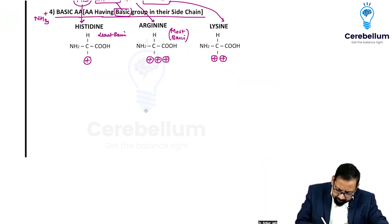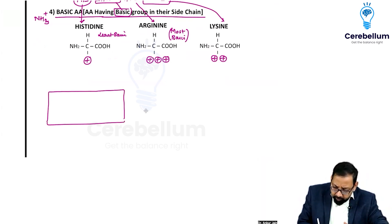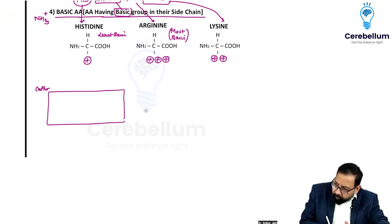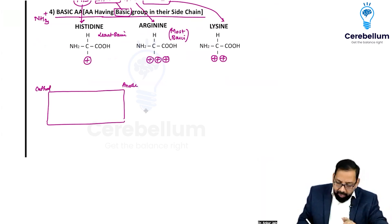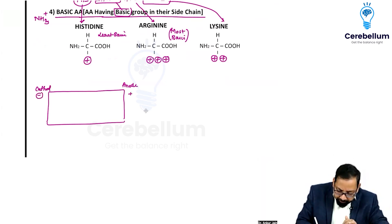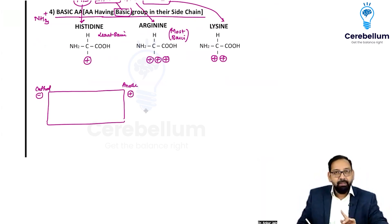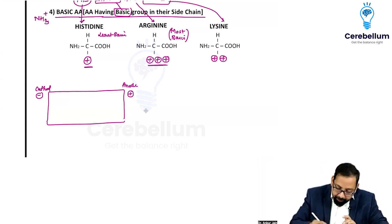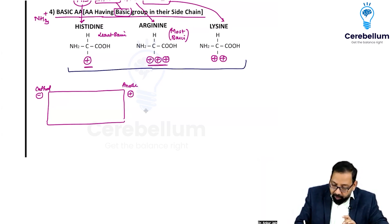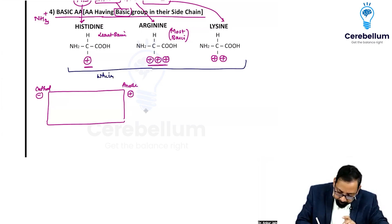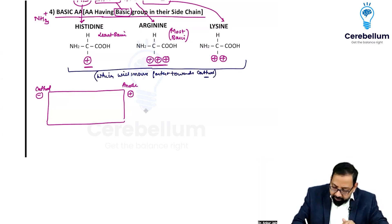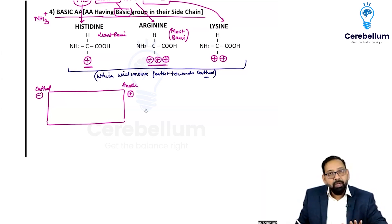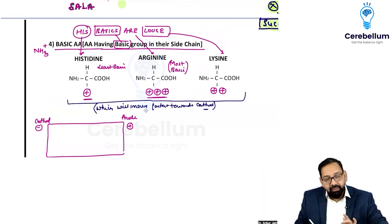In electrophoresis, the cathode has a negative charge and the anode has a positive charge. Arginine has the maximum positive charge and histidine has the least positive charge. So if a question asks which of these three amino acids will move fastest towards the cathode, the answer is arginine, because the cathode is negative and arginine has maximum positive charge.